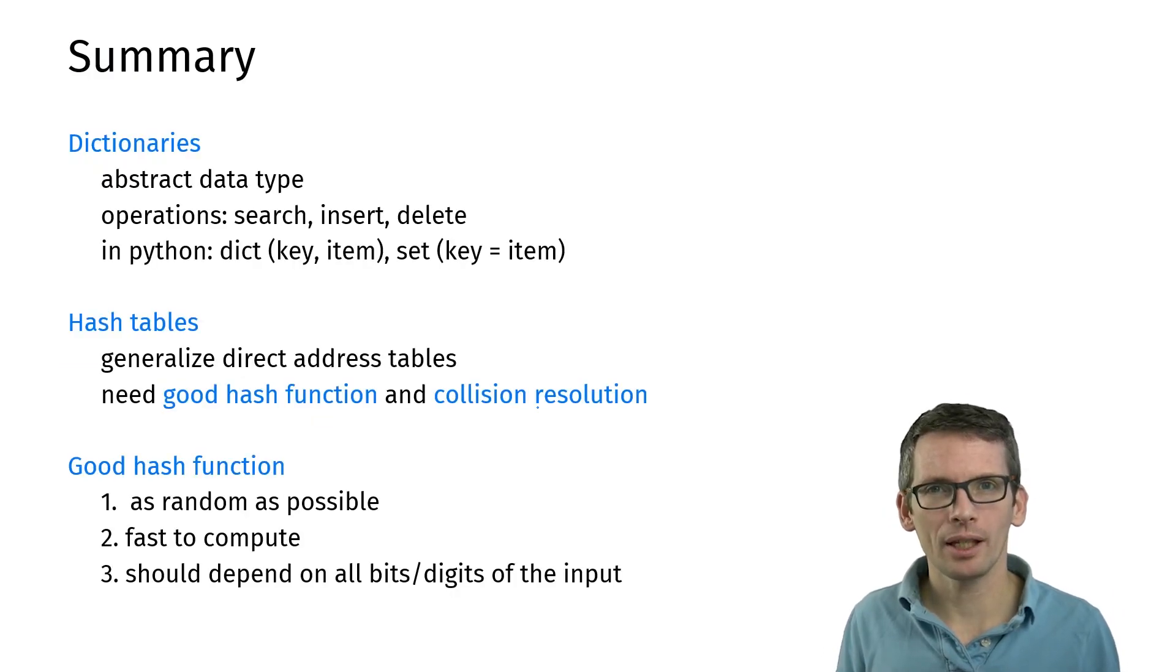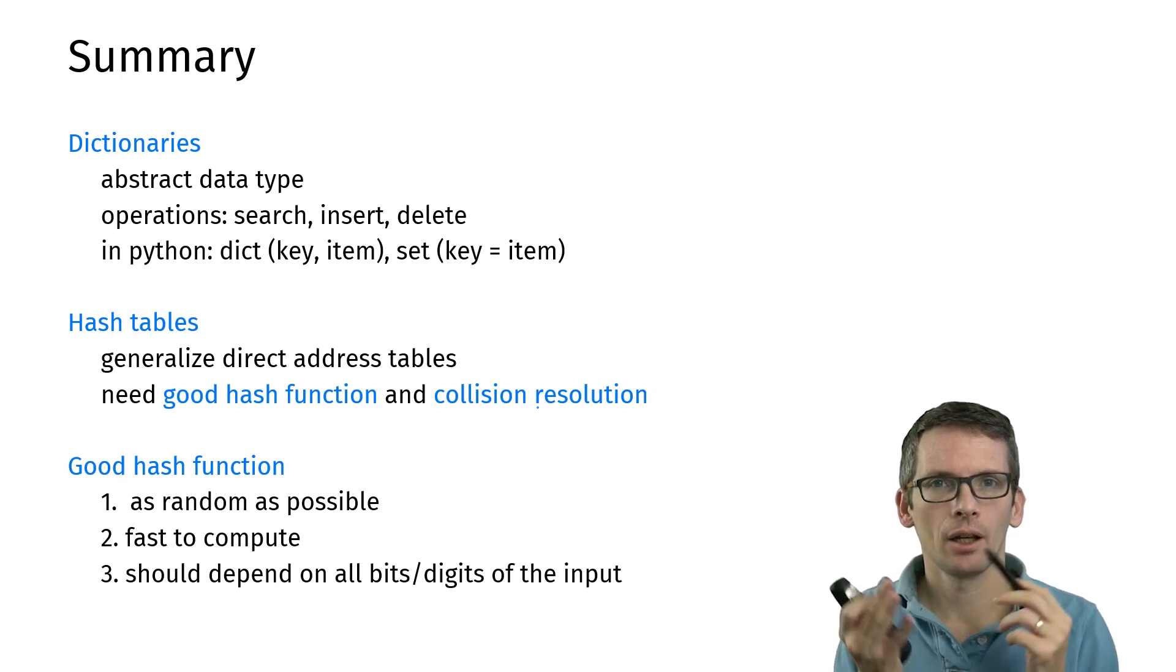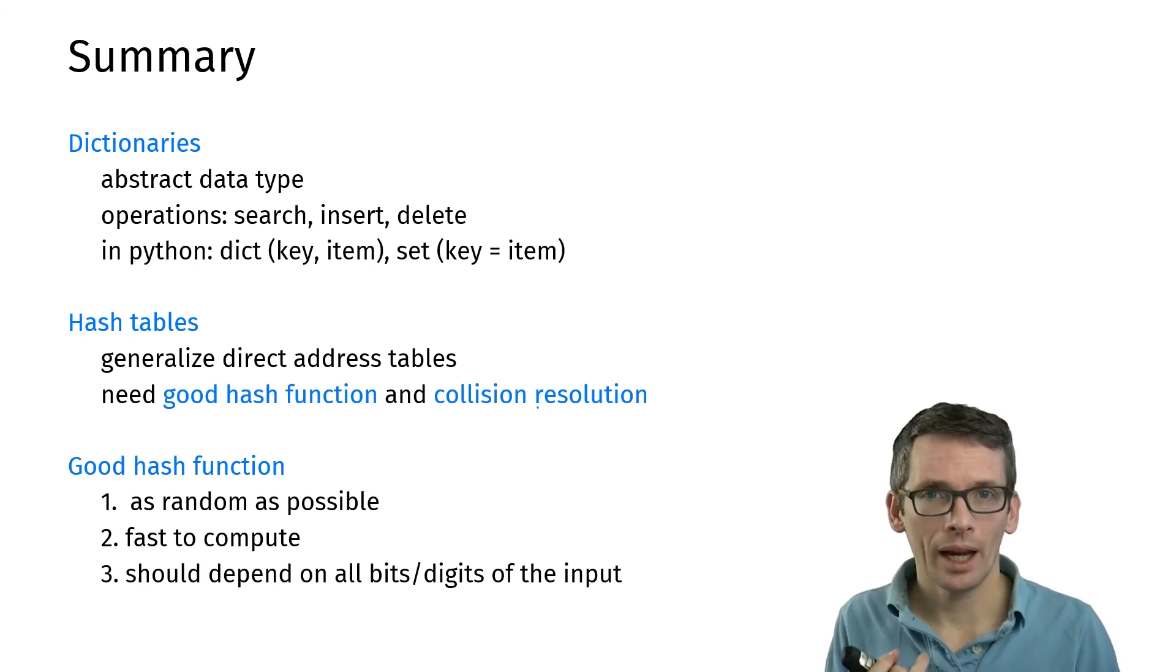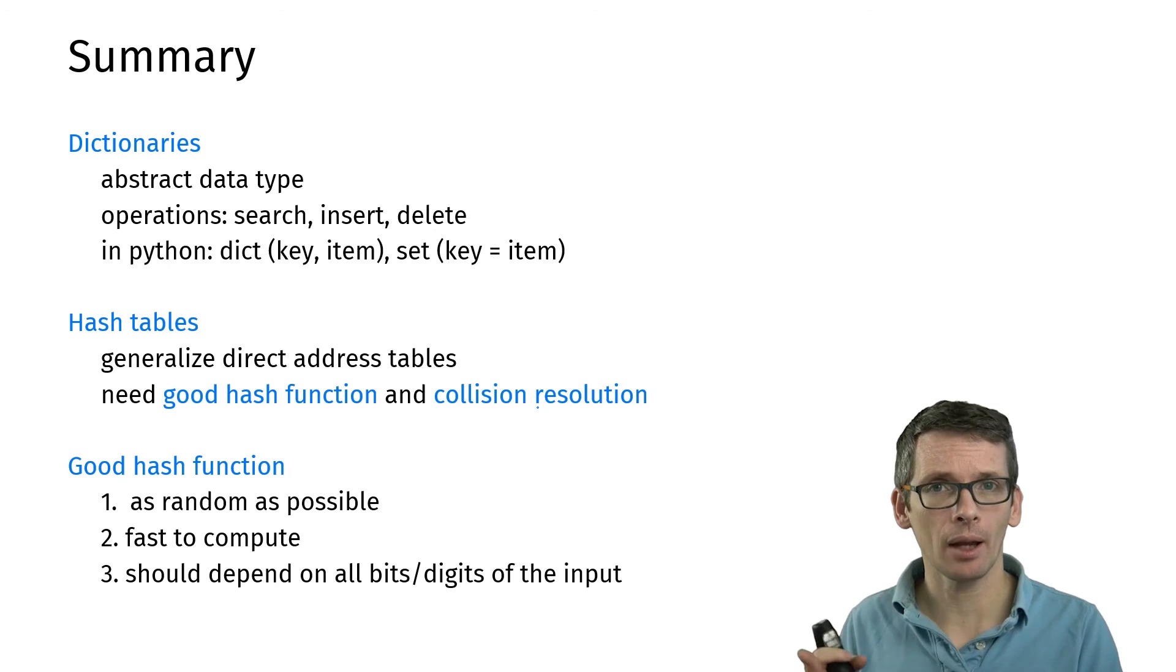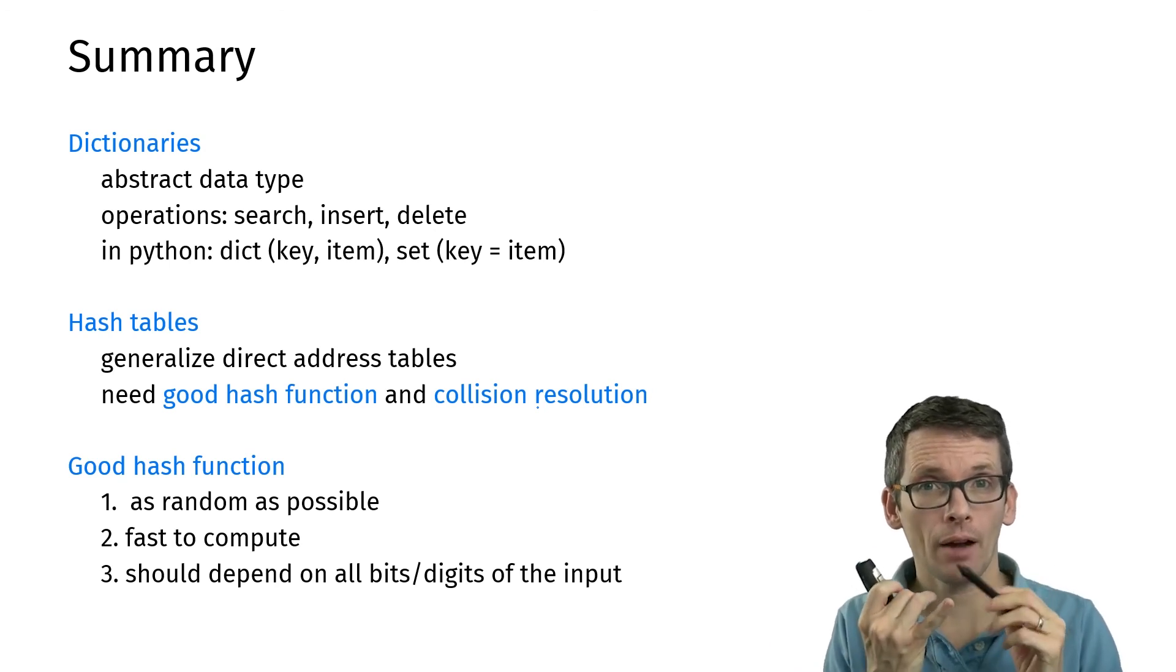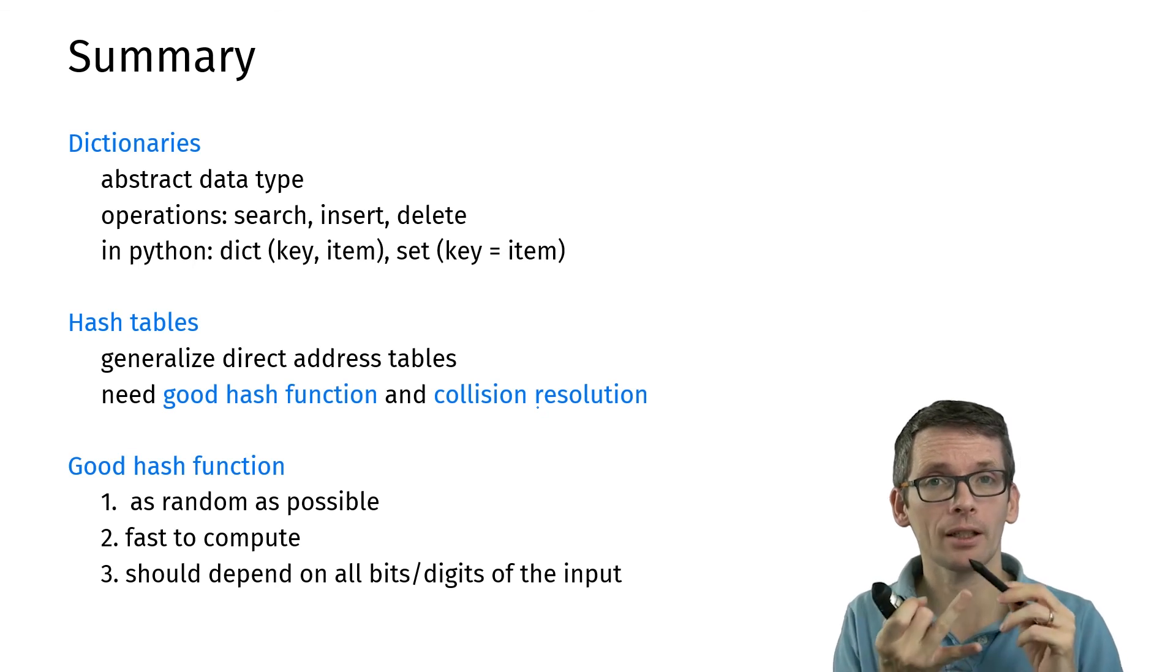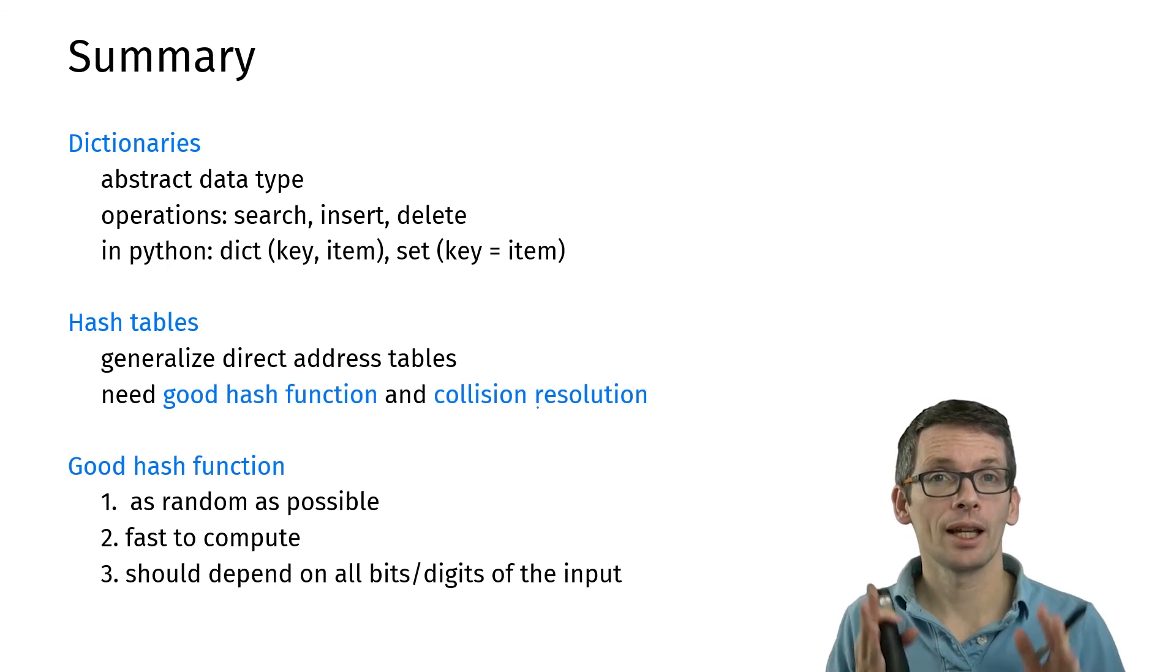So what have we seen in this video? We have seen dictionaries as abstract data types where we can search, insert, delete. They're available in Python as dict or set. We have seen the principle of hash tables coming from direct address tables, and the challenges we observed are that we need to have a good hash function—that's what we already discussed—and we need to be able to resolve collisions. That's what I'm going to show you in the next video. See you then.